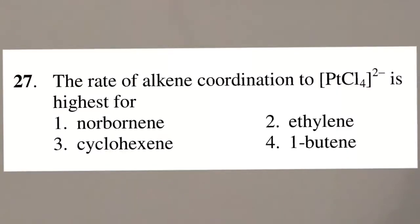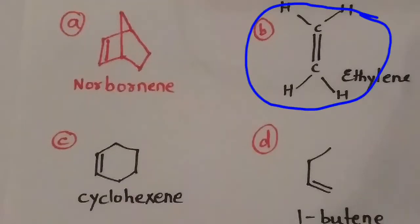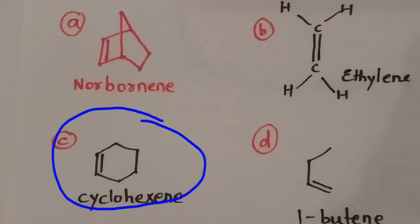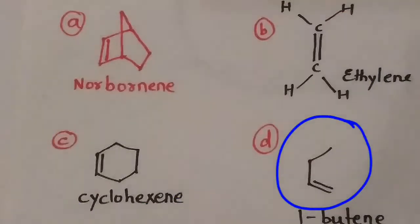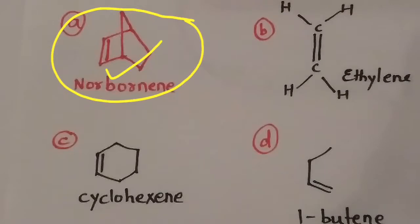Third question: the rate of alkene coordination to PtCl4²⁻ is highest for which compound? The structures shown are norbornene, ethylene, cyclohexene, and 1-butene. Norbornene is a highly strained molecule compared to the others; therefore, it will coordinate easily to release the strain. Option A is the right choice.